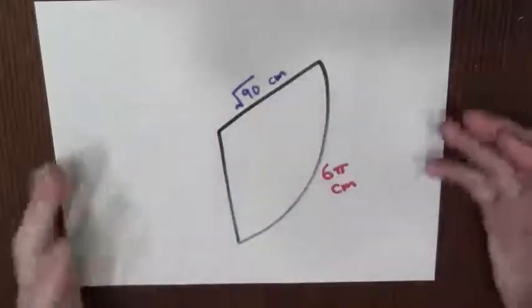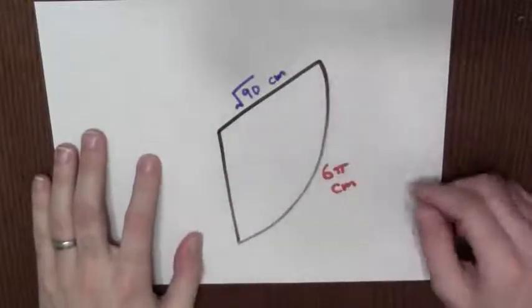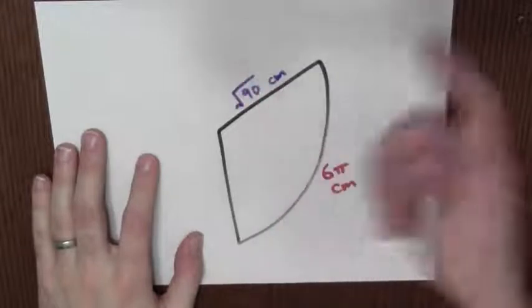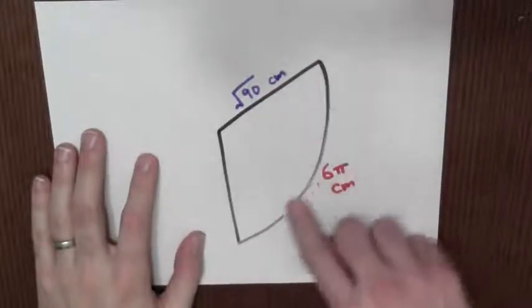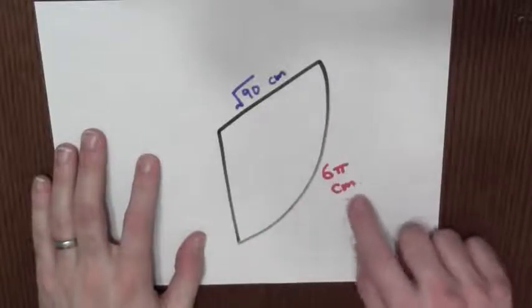Let's suppose that I have a cone of a certain size. To make this very concrete, I start with this little piece of a circle. This circle has radius square root of 90 centimeters, and the length of this arc is 6 pi centimeters.